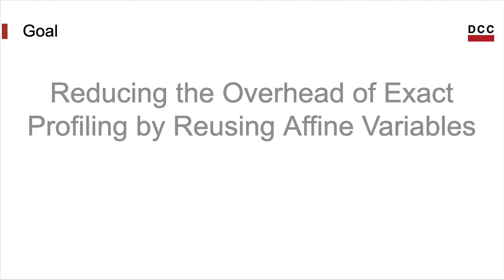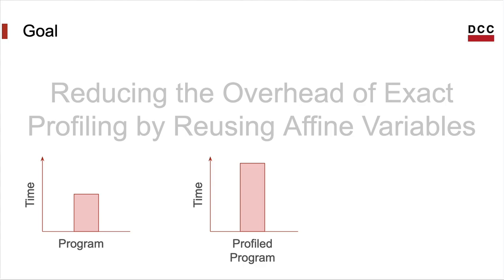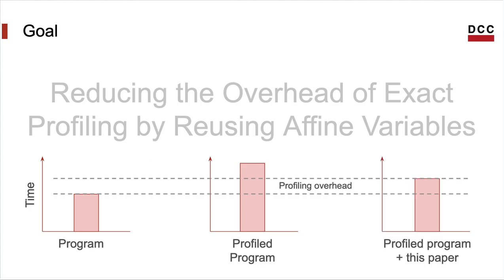The goal of this paper is given by the title: we want to reduce the overhead of profiling by using variables to replace profiling counters. Once we instrument a program to profile it, the counters that track the execution frequency of program sites will increase its running time. This growth in running time due to profiling counters is what we call the overhead of profiling, and we aim to reduce this overhead, though there will still be some remaining.